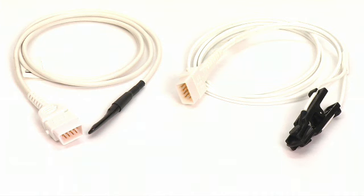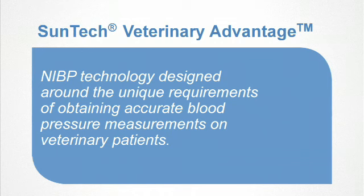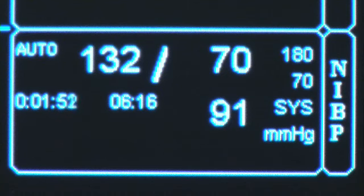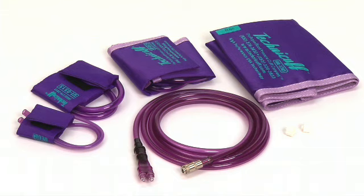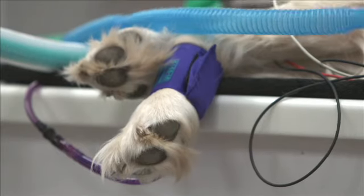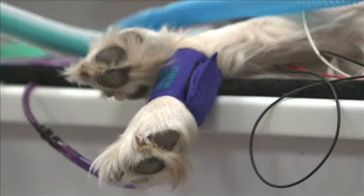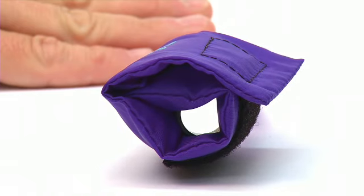There are four styles of veterinary-specific pulse oximetry sensors to choose from. SunTech Veterinary Advantage Non-Invasive Blood Pressure, or NIBP technology, has been designed around the unique requirements of obtaining accurate blood pressure measurements on veterinary patients. It measures systolic, diastolic, and mean NIBP values, with four different cuff sizes that comfortably fit a variety of patients. The unique 360-degree bladder allows for easy placement of the cuff.